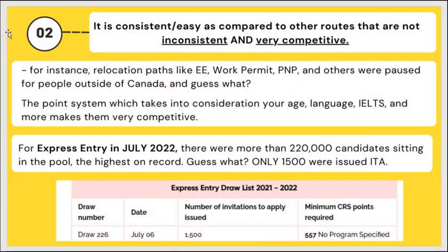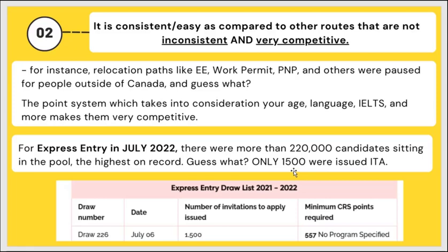You stay back, get your permanent residence, and in under three years get your citizenship in Canada if interested. Number two reason: the study visa route is very consistent and easy compared to other routes. Other immigration pathways like express entry, work permits, PNP, and others post for people outside of Canada, and the point system — taking into consideration age, language, IELTS, and more — makes them very competitive. For example, in the express entry draw in July 2020, there were more than 220,000 candidates in the pool.